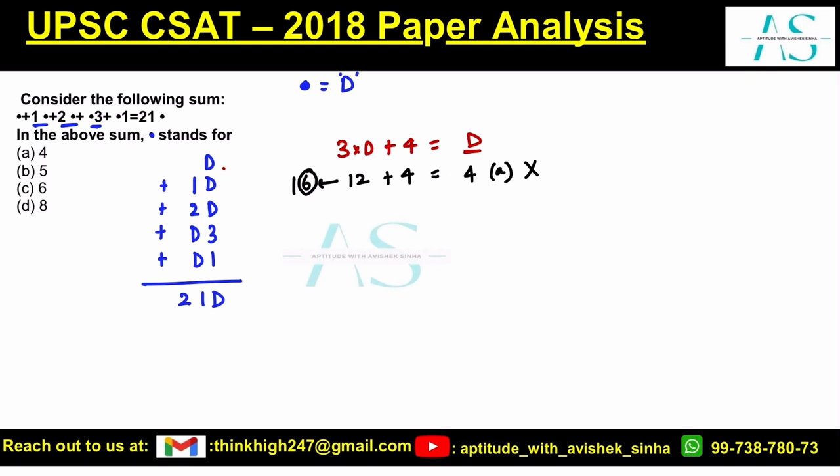Option B: 5, so 5 into 3 becomes 15, 15 plus 4 becomes 19. Does the last digit match? The last digit here is 5, the last digit here is 9, it doesn't match, rule out.